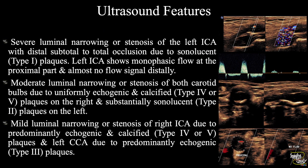In summary: severe luminal stenosis of the left internal carotid artery with distal subtotal to total occlusion is noted due to sonolucent Type 1 plaque. The left ICA shows monophasic flow proximally and almost no flow signal distally. Moderate luminal stenosis of both carotid bulbs is seen — due to echogenic calcified Type 4 or Type 5 plaques on the right side, and substantially sonolucent Type 2 plaques on the left. There is also mild luminal stenosis of the right internal carotid artery due to predominantly echogenic calcified Type 4 or 5 plaques, and of the left common carotid artery due to predominantly echogenic Type 3 plaques.